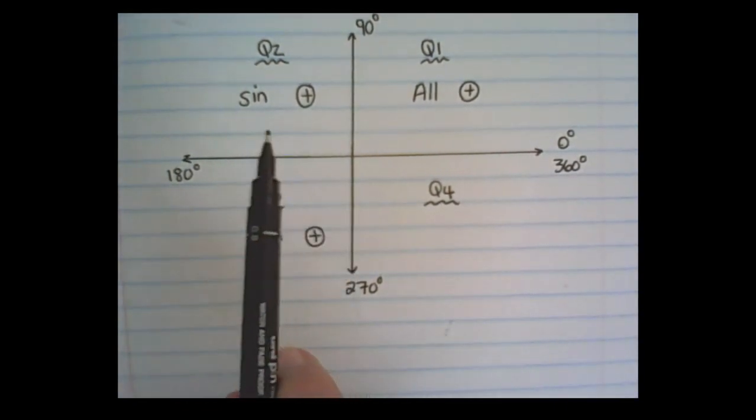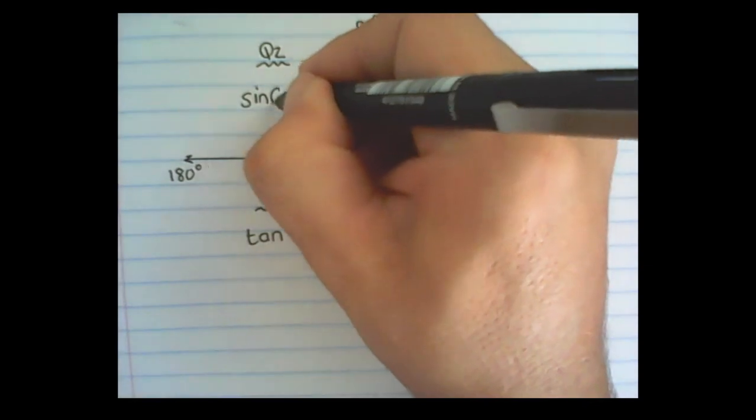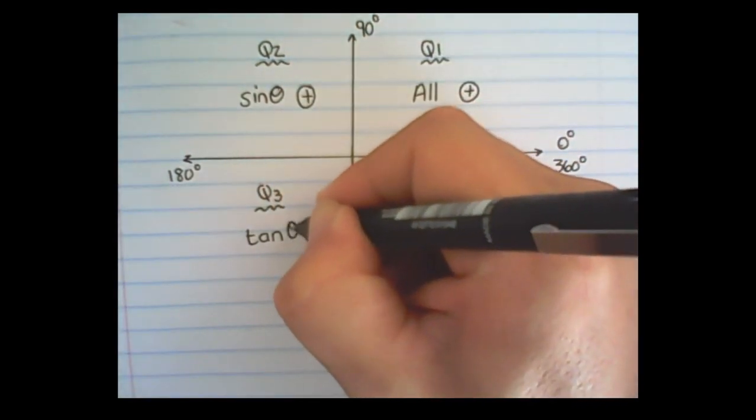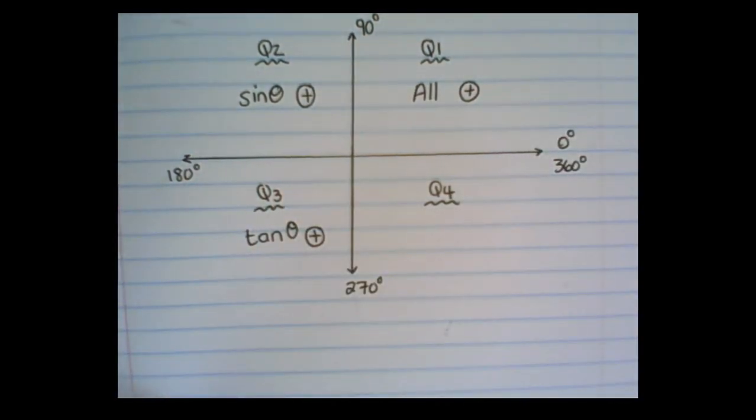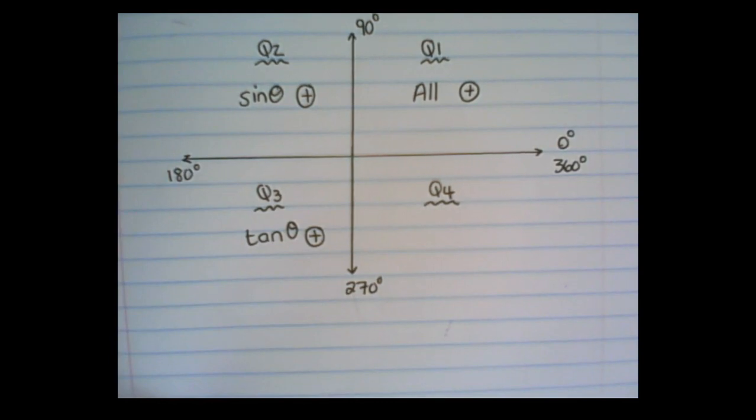In quadrant 3, only tan would be positive. So any value between 180 and 270 next to tan would produce a positive value. And sine and cosine between 180 and 270 degrees will give us negative values.